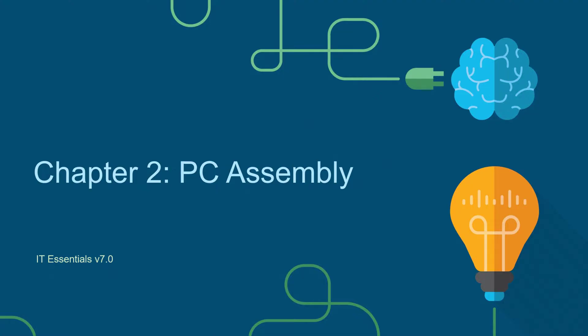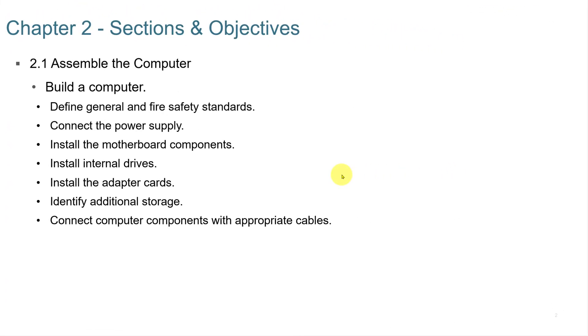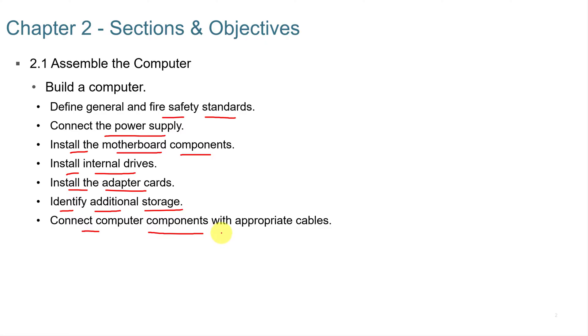This video series accompanies the Cisco Netacad IT Essentials 7.0 course. This video covers Chapter 2: PC Assembly. We're going to look at assembling the computer — general and fire safety standards, connecting the power supply, installing the motherboard components, installing internal drives, installing the adapter cards, identifying additional storage, and connecting computer components with appropriate cables.